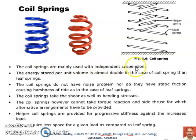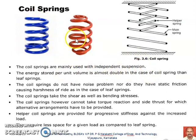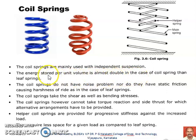Coil springs are mainly used with the independent suspension system. We have already observed that between the lower arm and the cross member of the chassis frame the coil spring is located. Similarly, in any independent suspension system the coil springs are invariably used. The advantage of using coil springs is that the energy stored per unit volume is almost double that of leaf springs, and they do not have noise problems or static friction causing harshness of the ride.